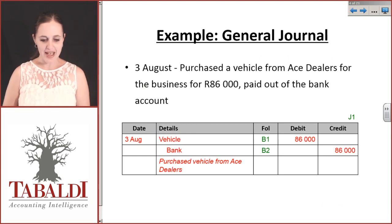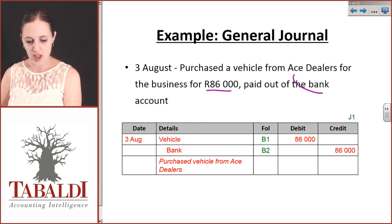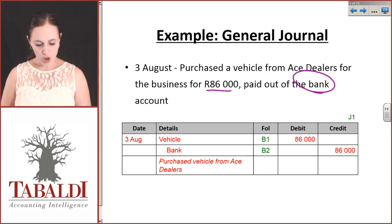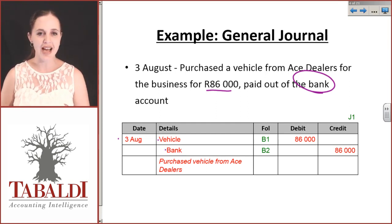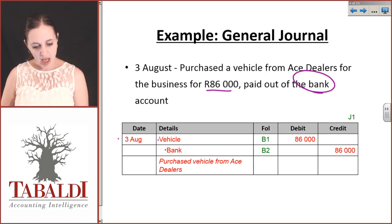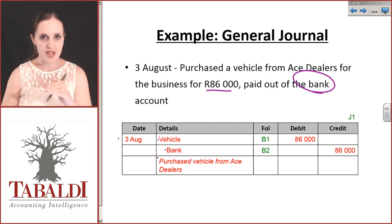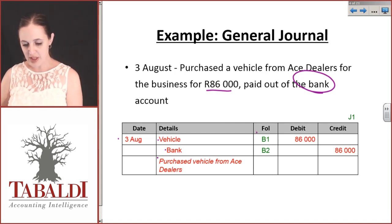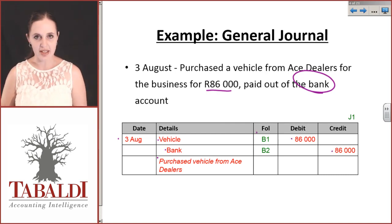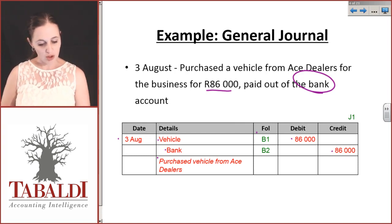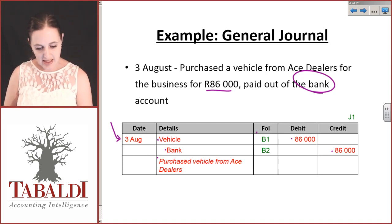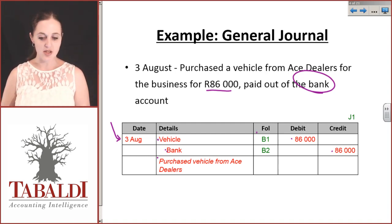On the 3rd of August you purchased a vehicle from Ace Dealers for the business for 86,000 Rand, and you paid out of the bank account. Your general journal would look like this: date the 3rd of August, you debit the vehicle and you credit bank. Notice how we identify the debits and the credit, and your narration is that you purchased a vehicle from Ace Dealers. You can see the narration gives us an indication of exactly what it was that we did. In an exam we can underline these narrations to show this is the description of the transaction.